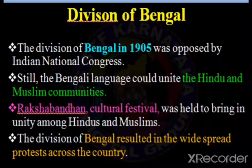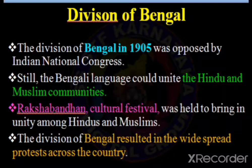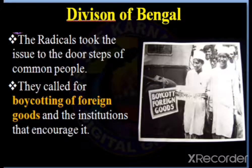The division of Bengal resulted in widespread protest across the country. The British thought they could stop the freedom movement by dividing Bengal, but due to the division, the freedom movement spread across the country. The radicals took the issues to the doorsteps of common people and called for boycotting of foreign goods and the institutions that encouraged it.